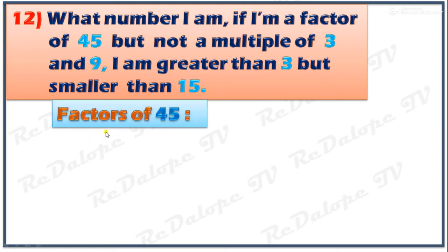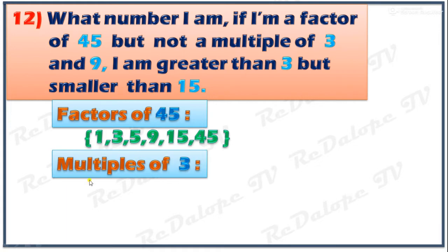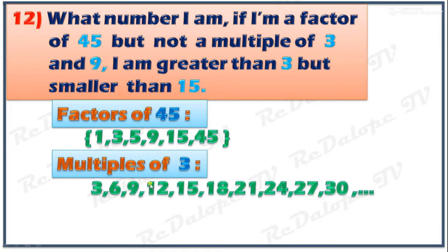Let's start with the factors of 45: 1, 3, 5, 9, 15, 45. For the multiples of 3, we have 3, 6, 9, 12, 15, 18, 21, 24, 27, 30, and so on and so forth.